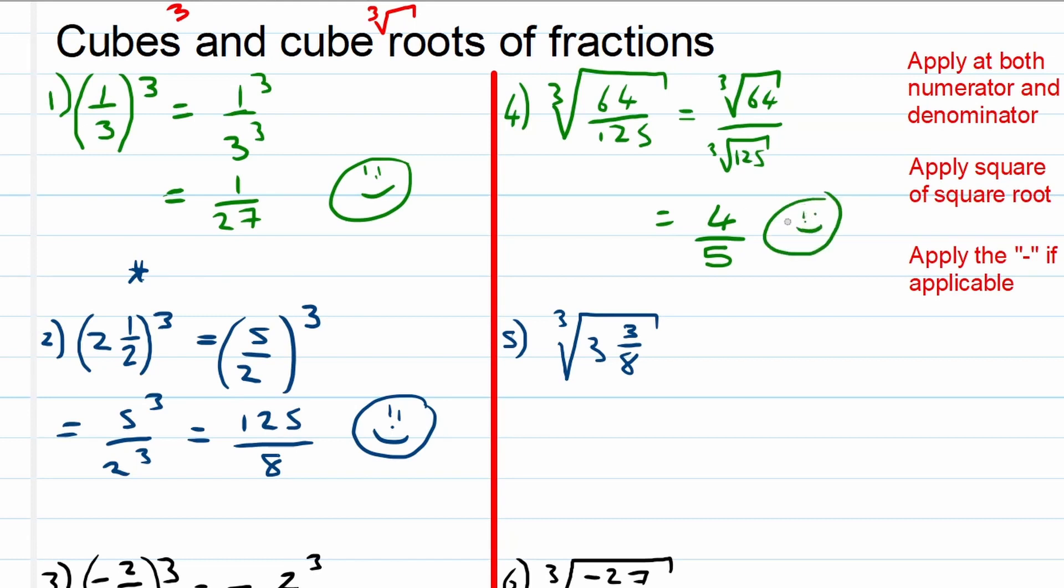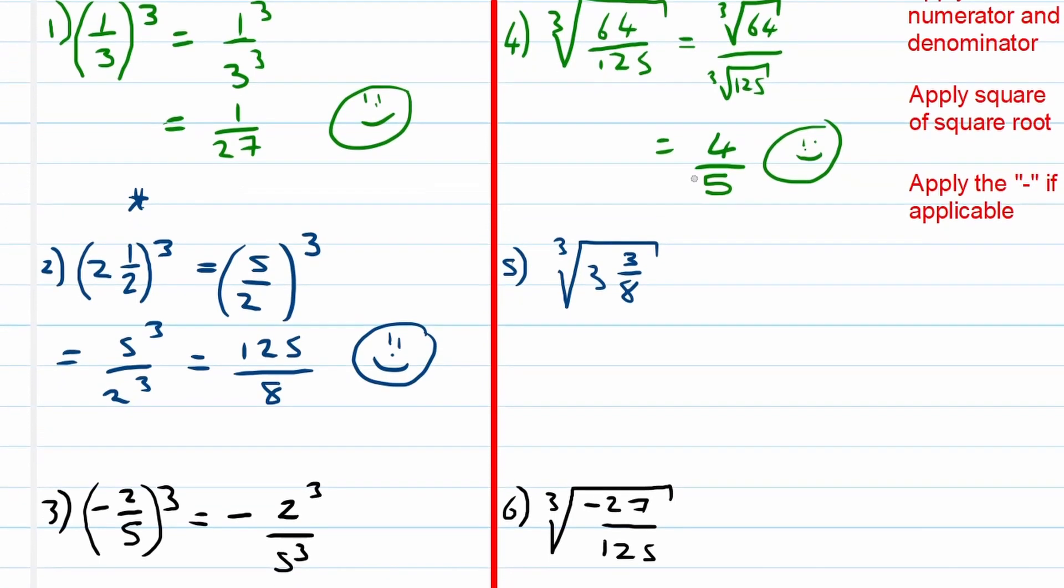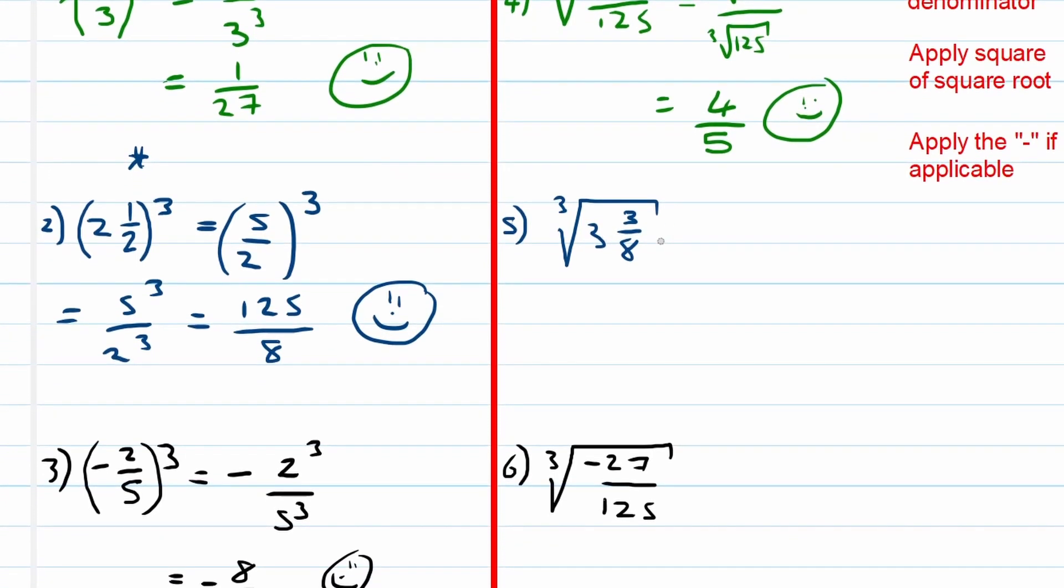Let's look at the second example of cube roots. We've got a mixed number again, right? So first of all we have to write it as an improper fraction. So 3 times 8 is 24, 24 plus 3 is 27, so this is 27 over 8. Then we apply the rules. This will become the cube root of 27 over the cube root of 8, and the cube root of 27 is equal to 3, cube root of 8 is equal to 2.